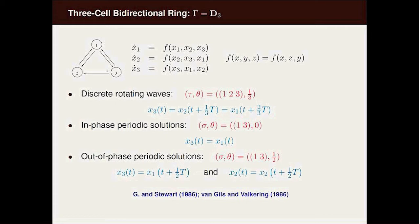Something that was looked at 30 years ago or so is the bidirectional ring of three cells. We have the kinds of differential equations that go along with this network. Here you can get discrete rotating waves. Tau is the symmetry that goes one to two to three back to one.